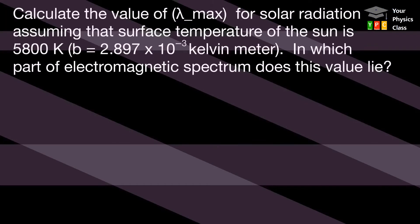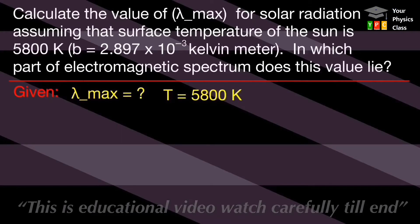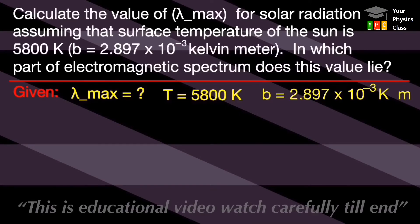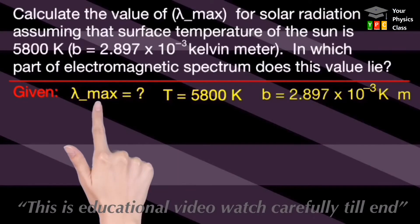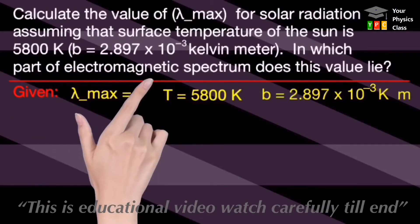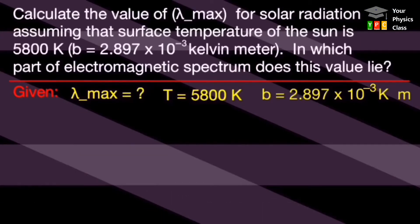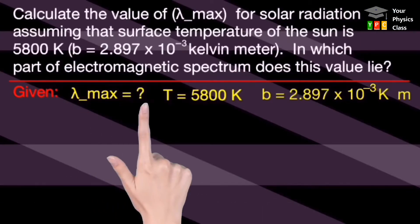Read the question carefully. Here in this question, we have to calculate the value of lambda max. Surface temperature of the sun is 5800 Kelvin and Wien's constant is given. Two questions are asked: the first question is to find lambda max and the second question is where does this wavelength lie in the electromagnetic spectrum. First of all, we will arrange the given data.